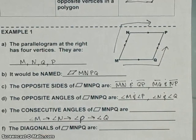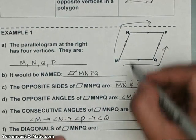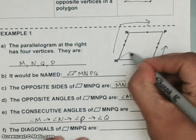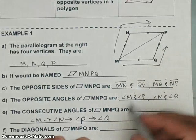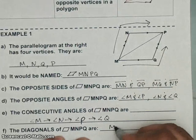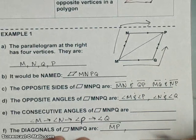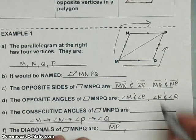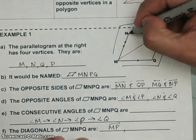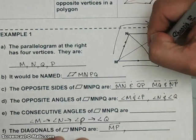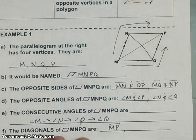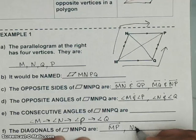Now the diagonals: that's going to be segment MP, and then you would have another one on the opposite side, which would be segment NQ.